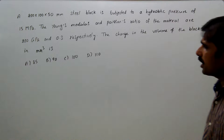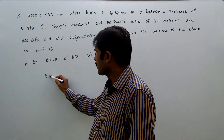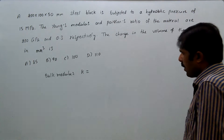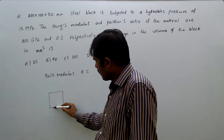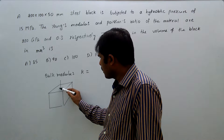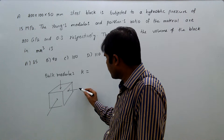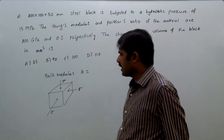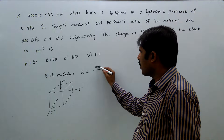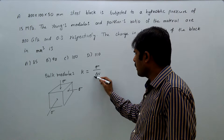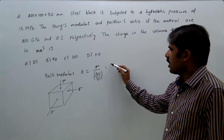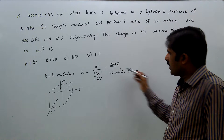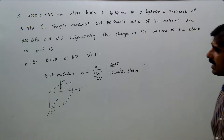Here two things are needed. First, we should know the relation between K and E. K is bulk modulus. Bulk modulus K is defined when you apply stress in all directions — this direction, this direction, this direction — if you apply stress from all sides, the same hydrostatic stress, the volume will decrease. So K equals stress divided by volumetric strain, where volumetric strain is change in volume divided by original volume.